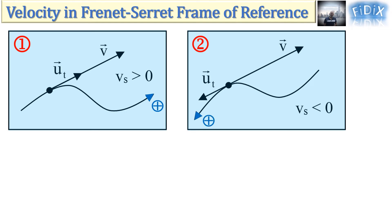This affects the direction of the tangential unit vector u_t that must be the same as the one chosen for the trajectory. The velocity v is not affected by the orientation of the trajectory and is represented by a vector which is always tangent to the trajectory at all its points.